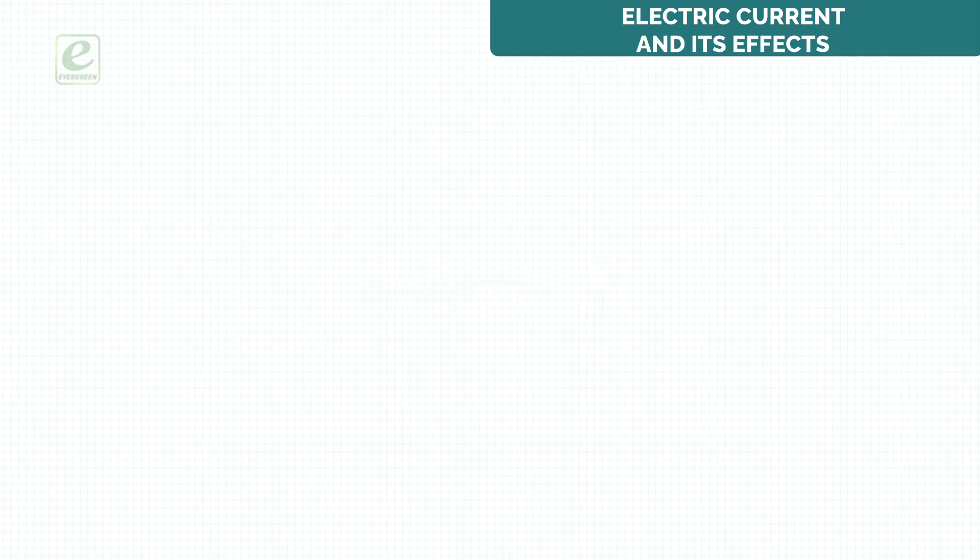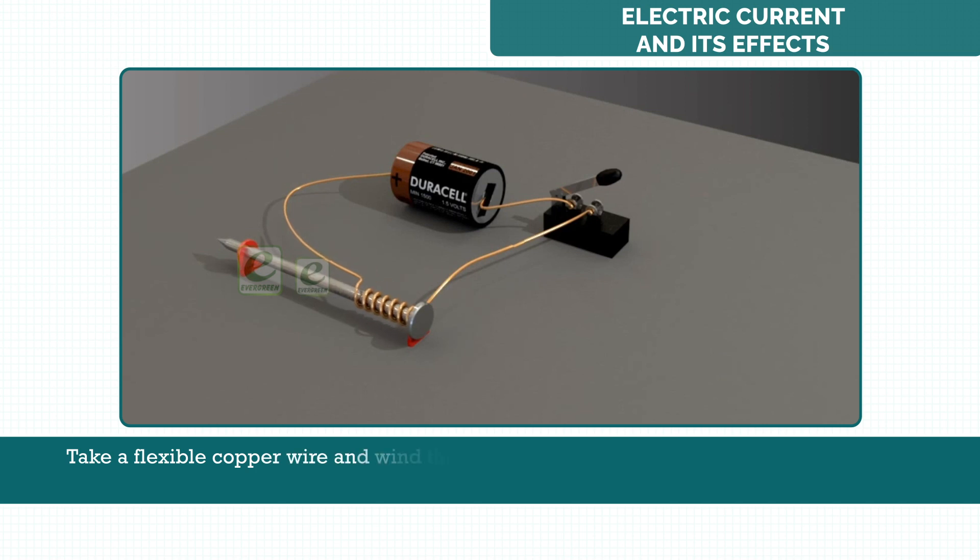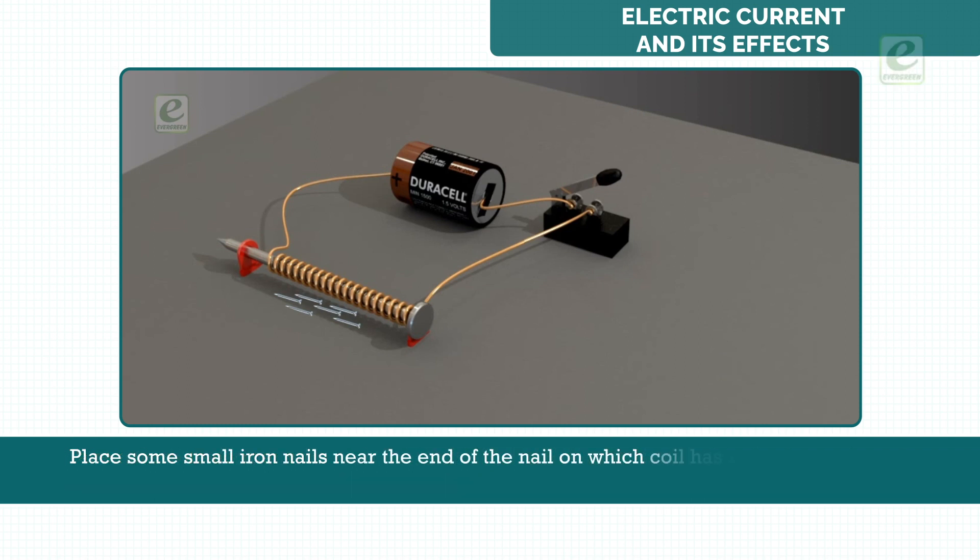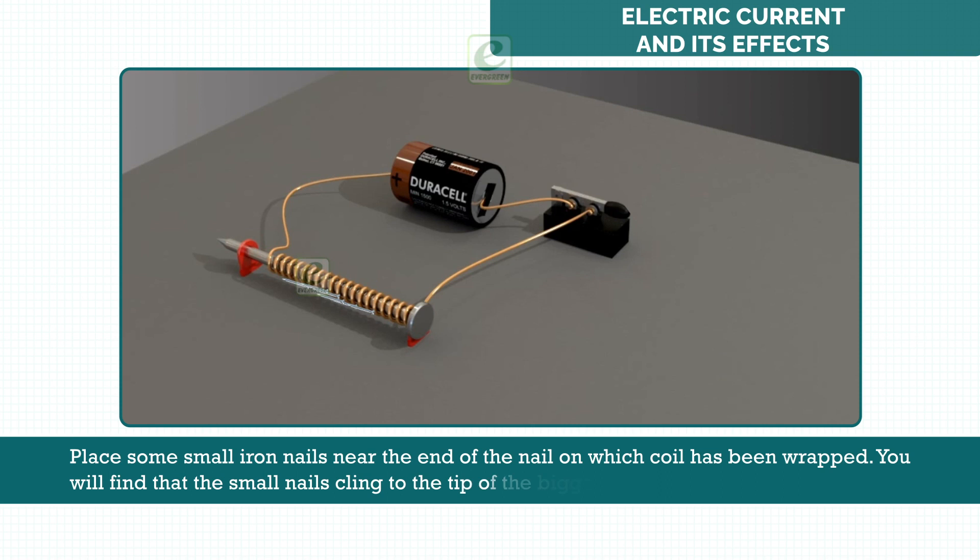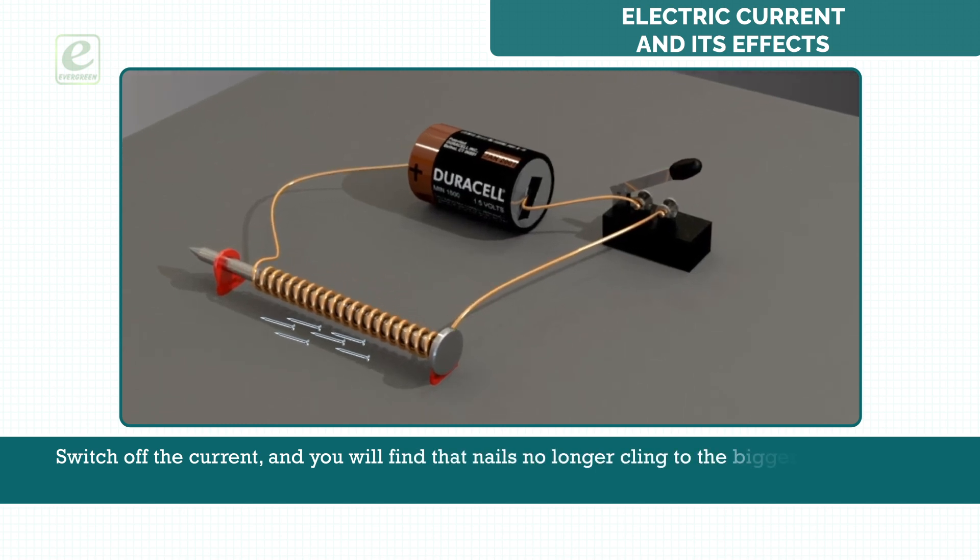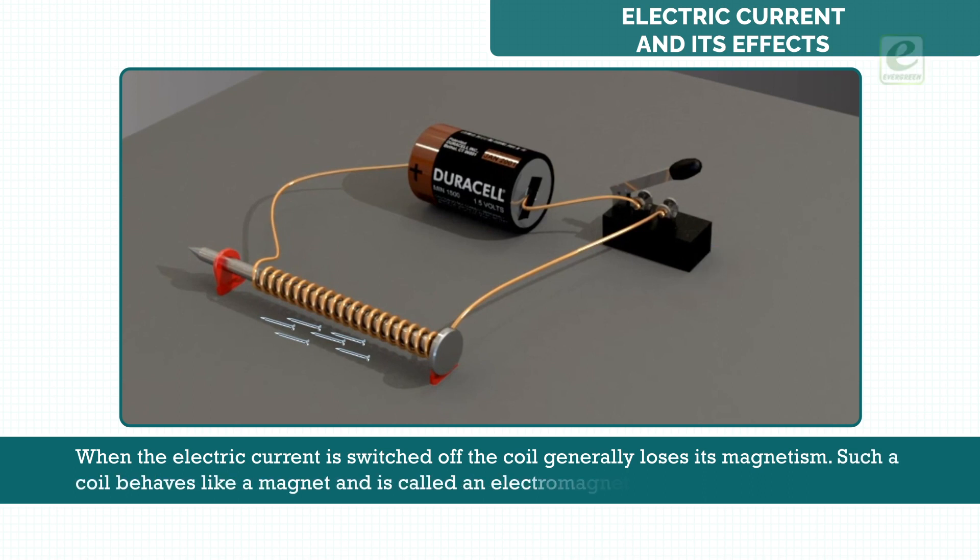Electromagnet. Take a flexible copper wire and wind the wire tightly around the nail in the form of a coil. Connect ends of the wire to the terminals of a cell. Place some small iron nails near the end of the nail on which coil has been wrapped. You will find that the small nails cling to the tip of the bigger nail. Switch off the current and you will find that nails no longer cling to the bigger nail. The coil behaves like a magnet when electric current flows through it. When the electric current is switched off, the coil generally loses its magnetism. Such a coil behaves like a magnet and is called an electromagnet.